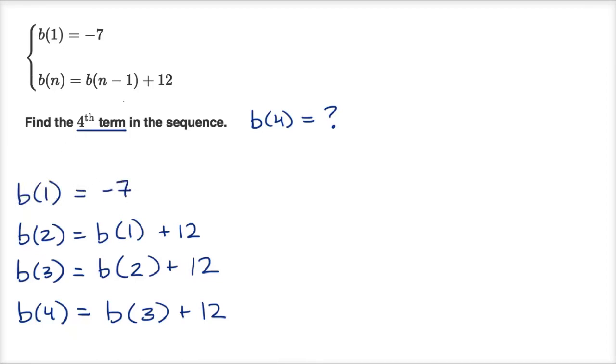Now we can fill everything back in. If b(1) equals negative seven, then b(2) equals negative seven plus 12, which equals five.